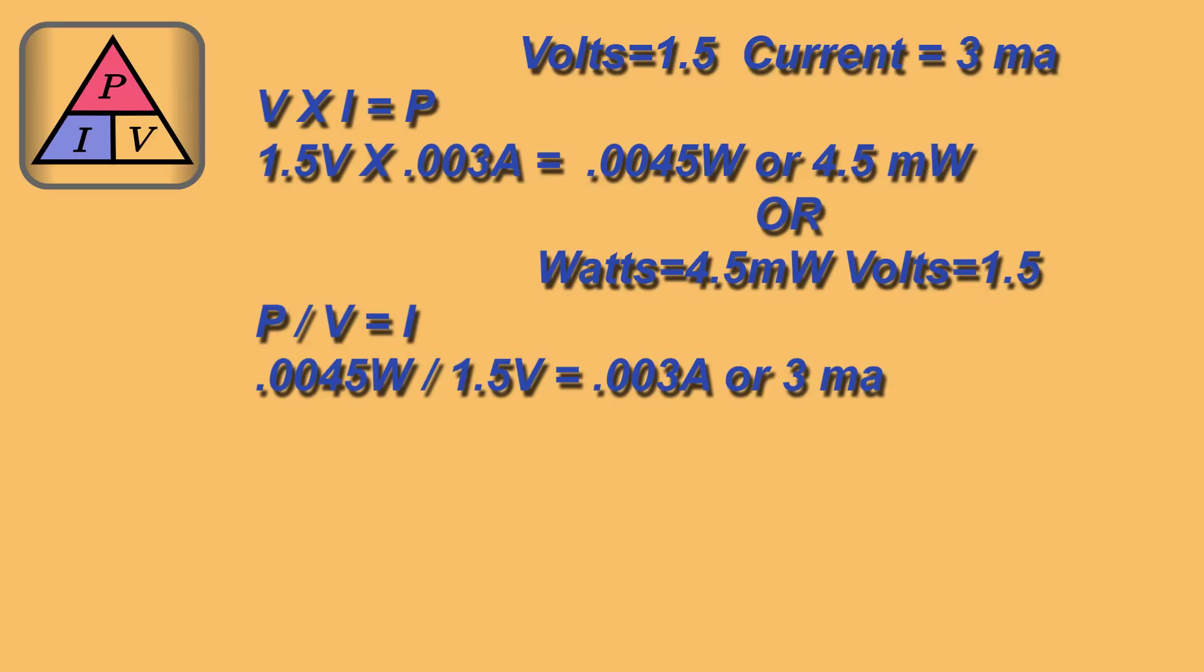So now let's see if the rest of it works out. We take our power in watts divided by the voltage to equal current. So here we would take 0.0045 watts divided by 1.5 volts, which equals 0.003 amps, or 300 milliamps.